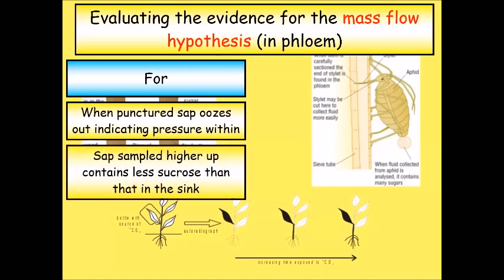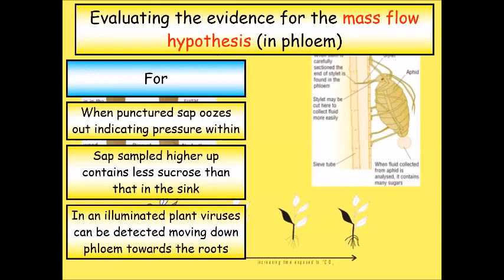So for it, when you cut into it it oozes sap it doesn't draw it in, there's more sucrose found in the source than the sink because it's been converted to starch and also that's where photosynthesis is occurring, and also viruses have been seen to move down towards the roots so they're sort of going with the flow in the phloem.